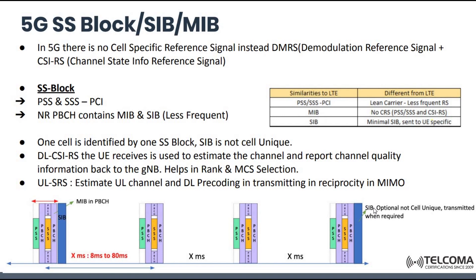SIB is different for different things — some SIBs are for neighbor cell relations and their RSRP and RSRQ levels. These are required as per the UE requirement when they get sync with the network. The downlink CSI-RS that the UE receives is used to estimate the channel and report channel quality information back to the gNodeB, which helps in rank and MCS selection.